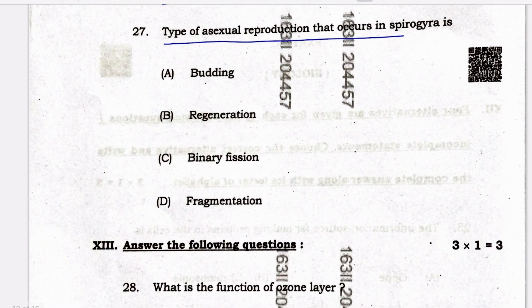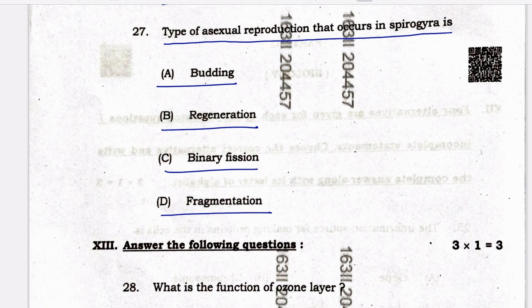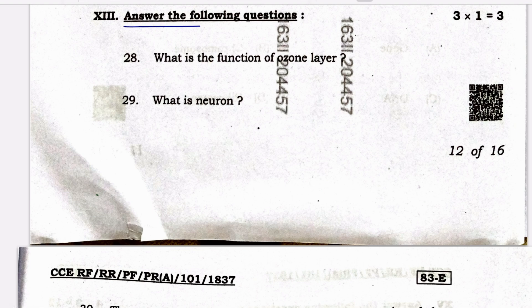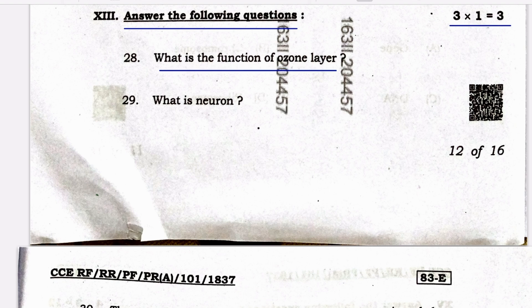The type of asexual reproduction that occurs in Spirogyra is — option A: budding, option B: regeneration, option C: binary fission, option D: fragmentation. Next main — answer the following questions. Question 28: what is the function of the ozone layer? It protects us from UV radiation and prevents skin cancers. Question 29: what is a neuron? The structural and functional unit of the nervous system is called a neuron.